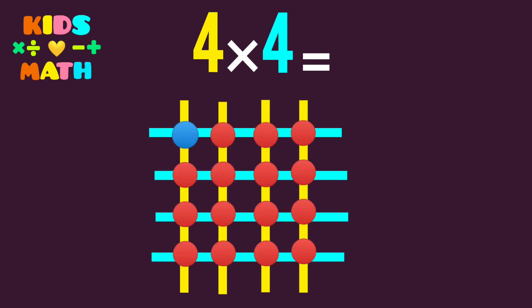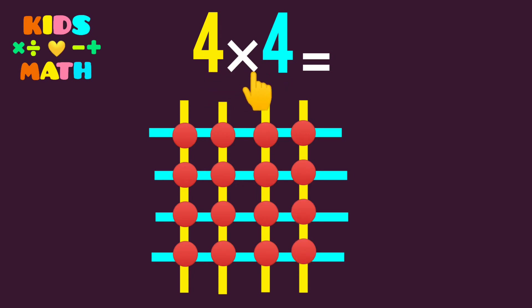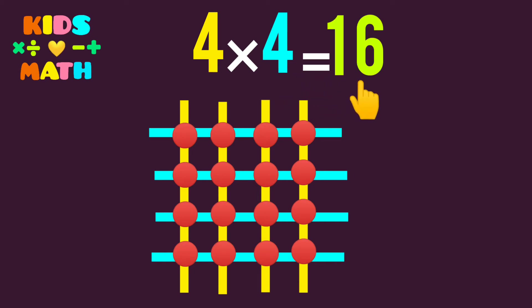We count: 1, 2, 3, 4, 5, 6, 7, 8, 9, 10, 11, 12, 13, 14, 15, 16. So 4 times 4 equals 16.